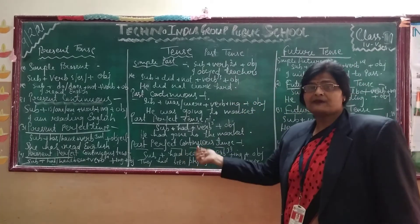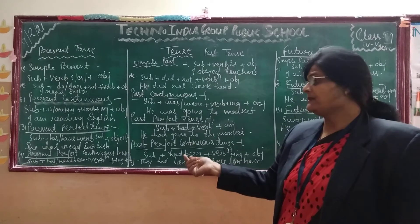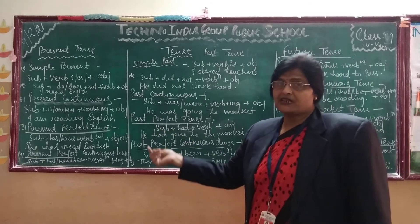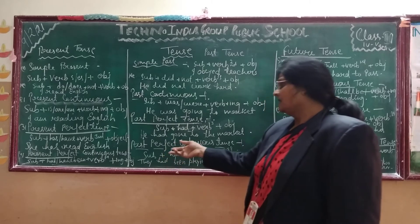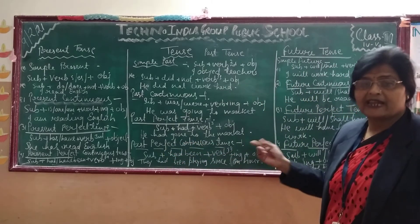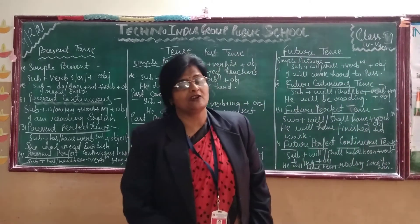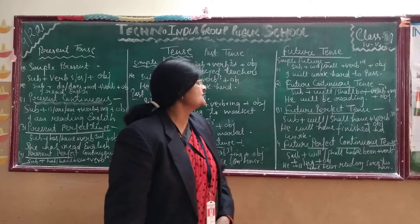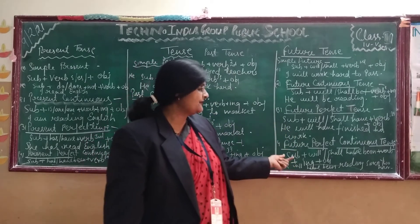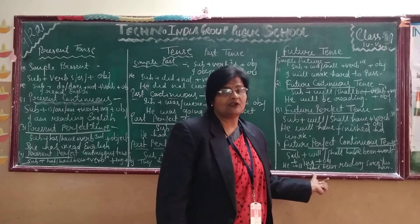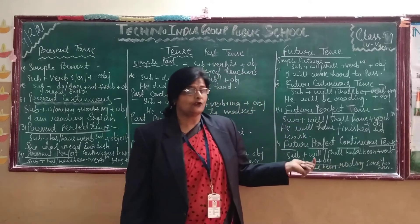In past perfect continuous tense, we use had been plus verb+ING. In future perfect continuous tense, we use will have been or shall have been, plus first form of the verb with ING and object. In future tense, we always use will or shall.